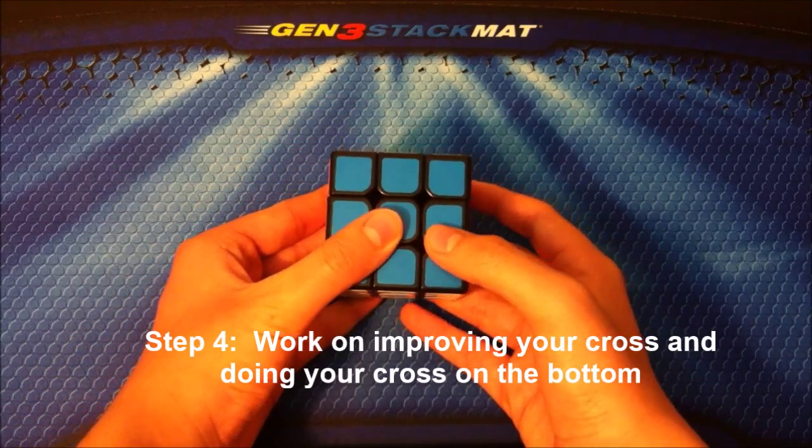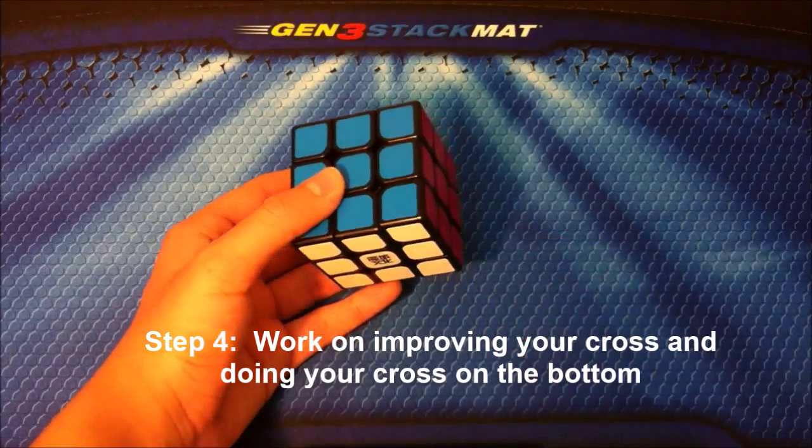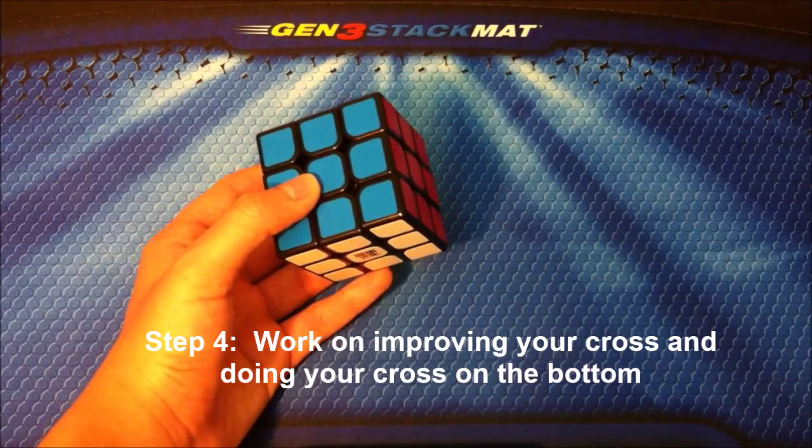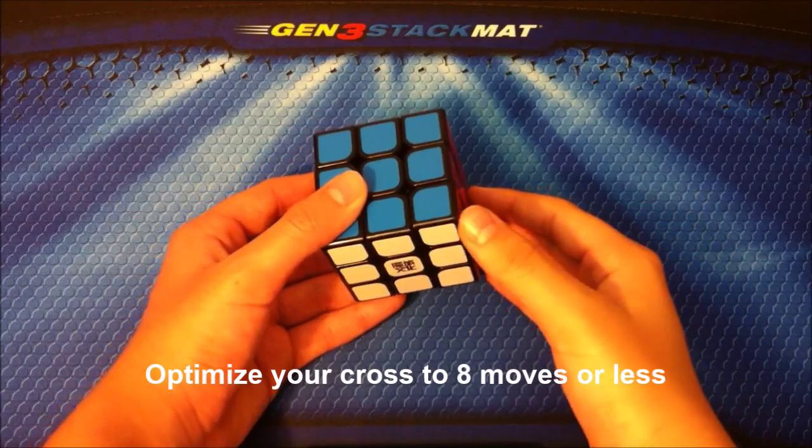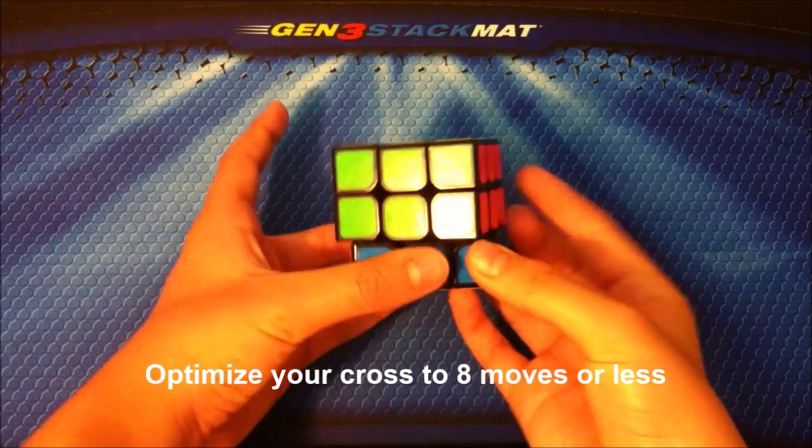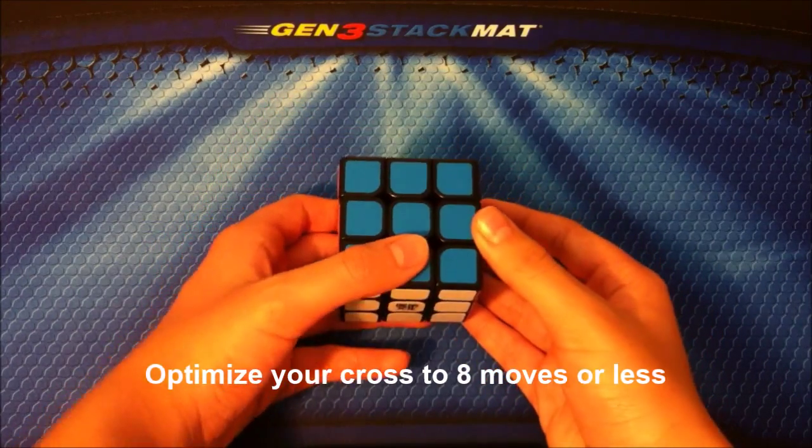Step four: improve your cross and do cross on the bottom. This is a very important skill. You need to make your cross very optimal and eight moves or less so you can execute it in three to four seconds.